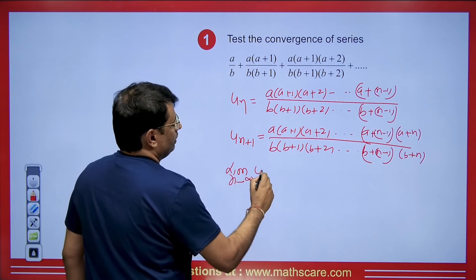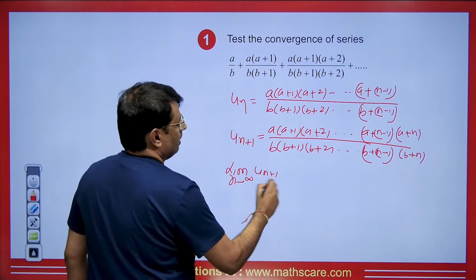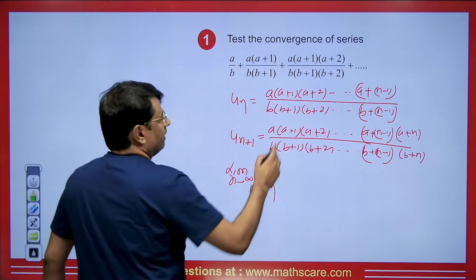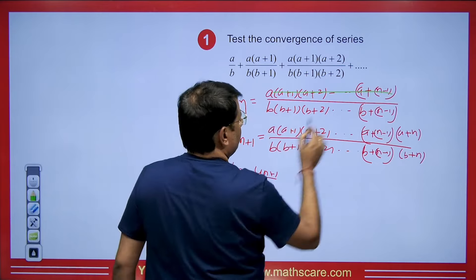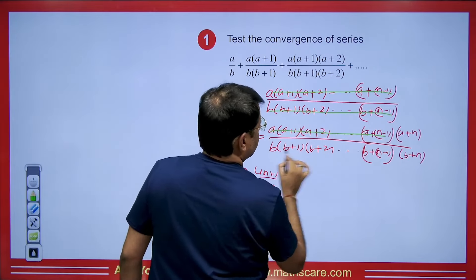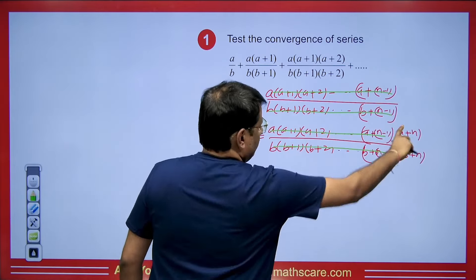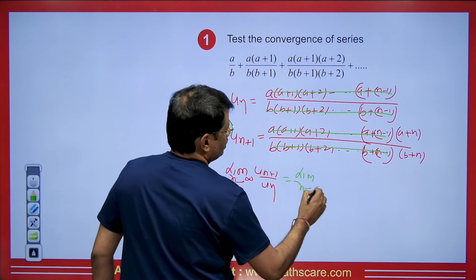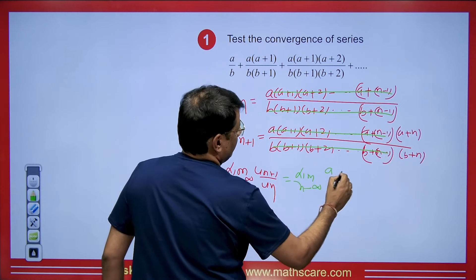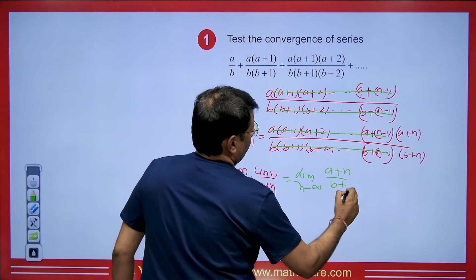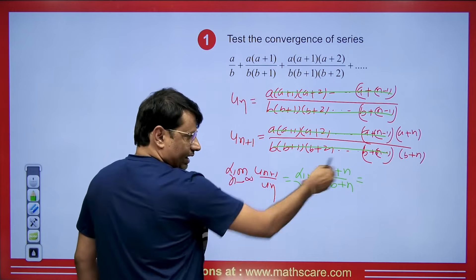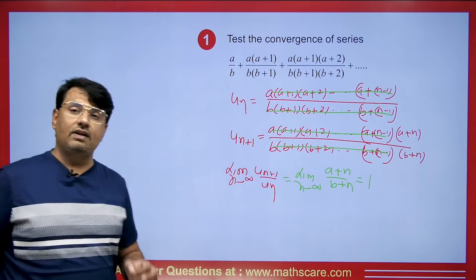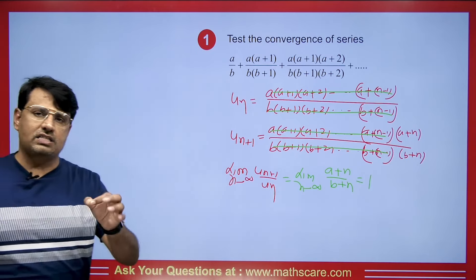We find the limit as n tends to infinity of U_{N+1} / U_N. Most terms cancel, leaving only (A+N) / (B+N). Taking N common and letting n tend to infinity gives 1, meaning the D'Alembert test fails. So we now apply the Rabbe test.